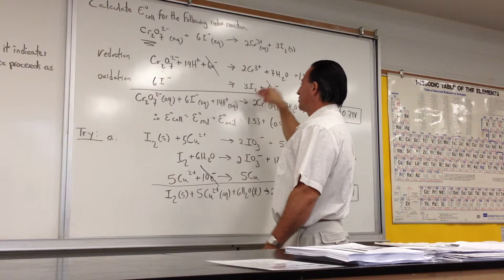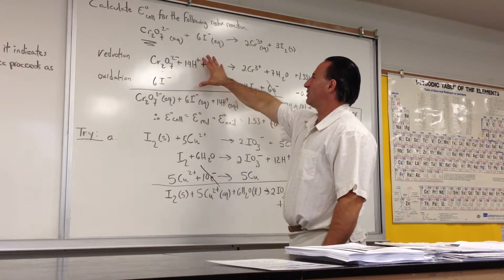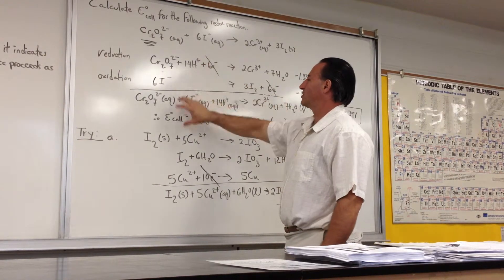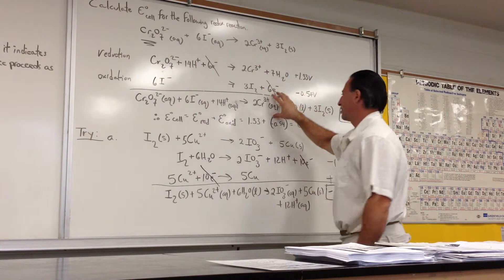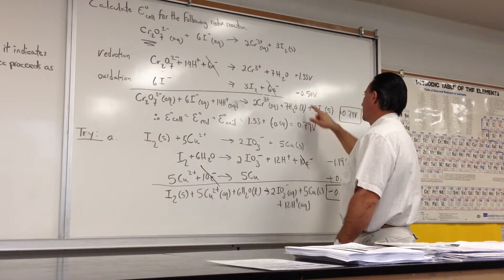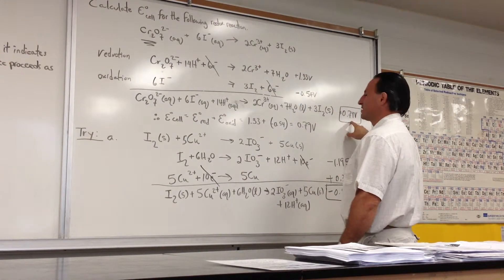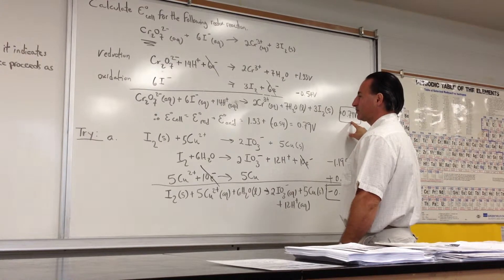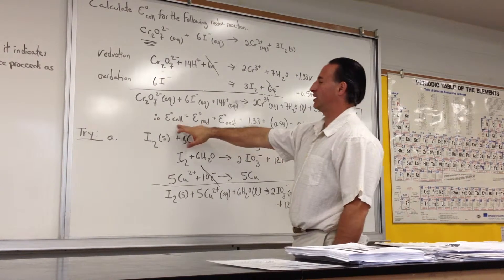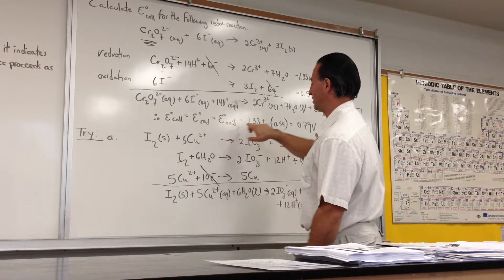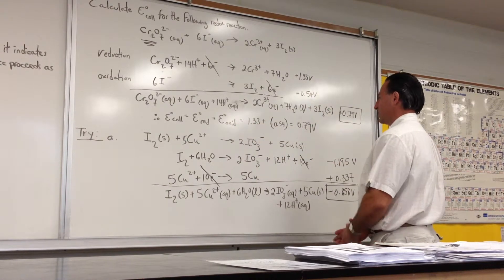When you add the two reactions, the electrons cancel, and we add everything that's on the left-hand side of the arrows on this side, everything that's on the right-hand side of the arrows will be on that side, and we get a net voltage of 0.79. That's the voltage for the cell. Again, if we recall, E-not cell is E-not reduction plus E-not oxidation. Add those two quantities, you get 0.79.